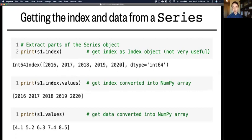Notice the syntax, which we read from left to right, we get the index of S1. And then from that, we get the values of the index of S1. We might think we could write just S1.data to get the data, but that's not actually correct. Instead, we use dot values to get back the underlying NumPy array for the data.